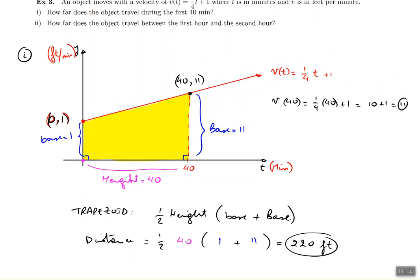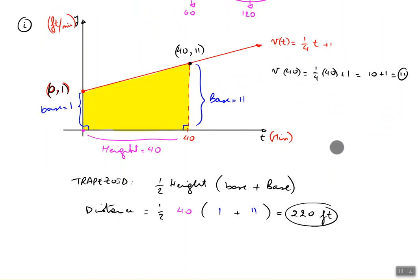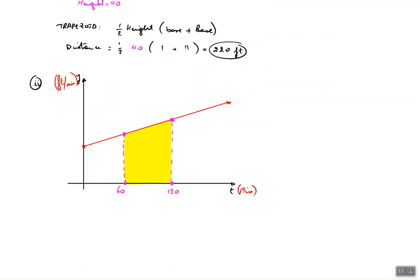Now the question is, how far does the object travel between the first hour and the second hour? Remember, the first hour means how many minutes have passed. That just means 60 minutes. The second hour is going to happen at the 120th minute. So what they want us to do is basically figure out the area between 60 and 120. So let's redesign the graph and figure out what that area is going to look like. If you look carefully at example part two, the velocity function is again (1/4)t + 1. It's the same kind of a graph.